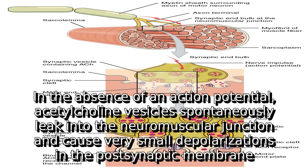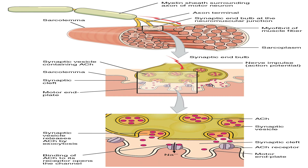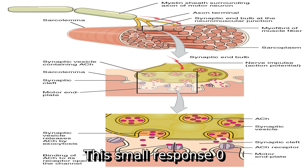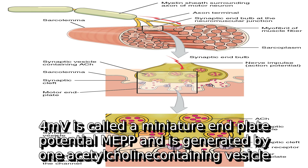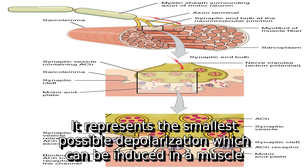In the absence of an action potential, acetylcholine vesicles spontaneously leak into the neuromuscular junction and cause very small depolarizations in the postsynaptic membrane. This small response of 0.4 mV is called a miniature endplate potential (MEPP) and is generated by one acetylcholine-containing vesicle. It represents the smallest possible depolarization that can be induced in a muscle.